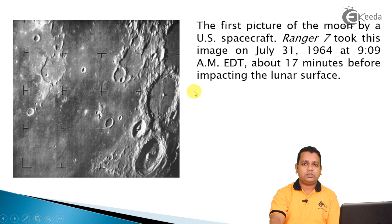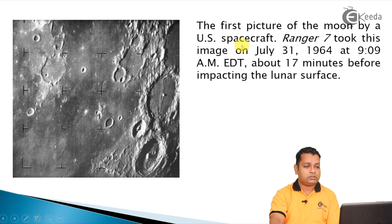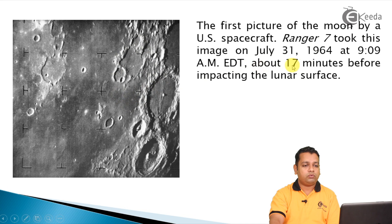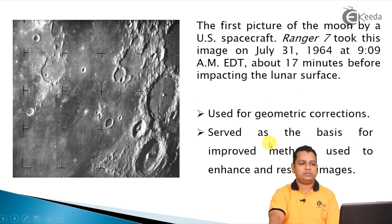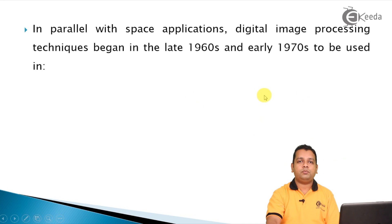From 1964, with further development in digital image processing, we have the first picture of the Moon by the U.S. spacecraft Ranger 7. This image was captured approximately 17 minutes before impacting the lunar surface. The markings visible in this picture are for geometric corrections, and this work served as the basis for improved methods used to enhance and restore images.